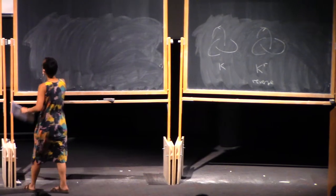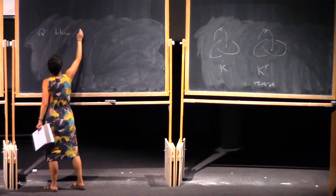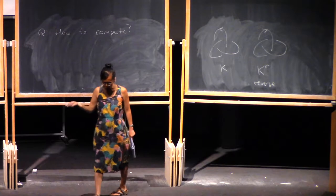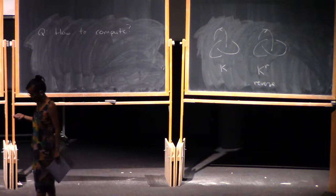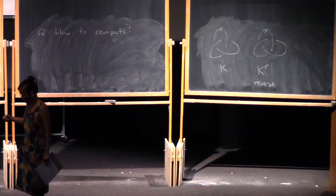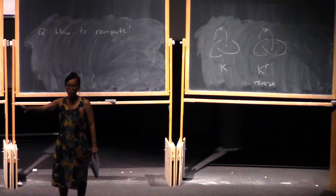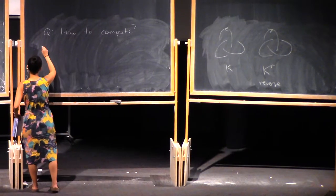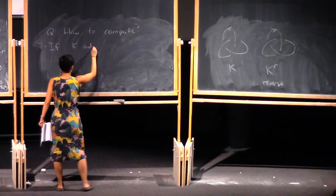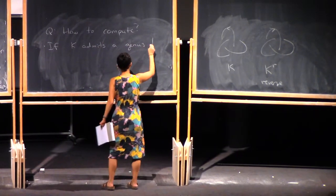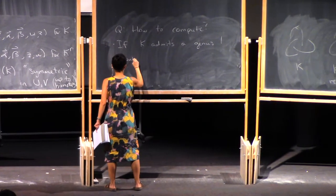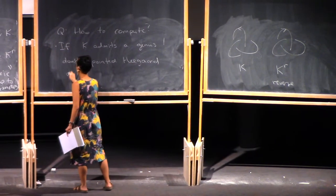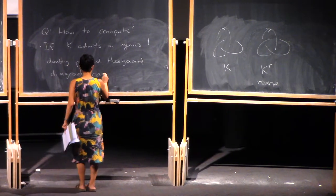One question you might have is: how do you compute this? We did one example, the trefoil. If your knot has a genus 1 doubly-pointed Heegaard diagram, you can just compute it from the definition — use the Riemann mapping theorem to figure out which disks to count. So if K admits a genus 1 doubly-pointed Heegaard diagram, you can compute this directly.